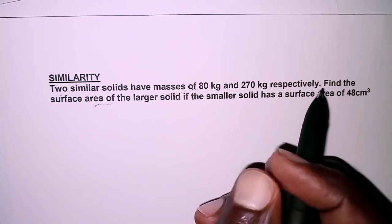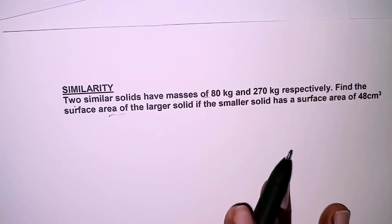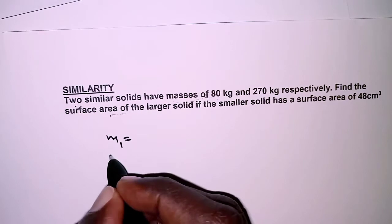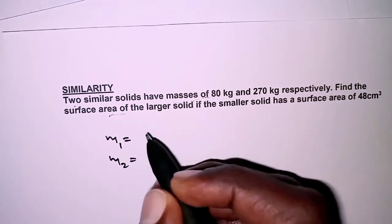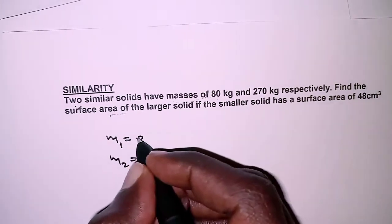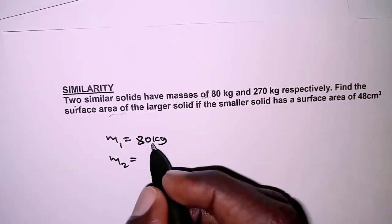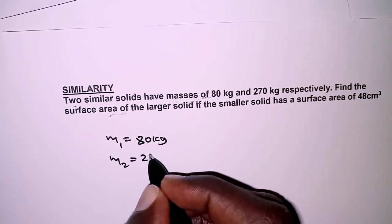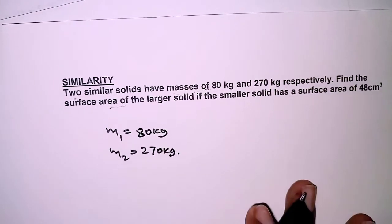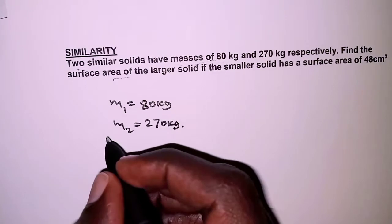First of all, we are told that the masses M1 and M2. So mass for the first solid is 80 kilograms and the other solid is 270 kilograms.